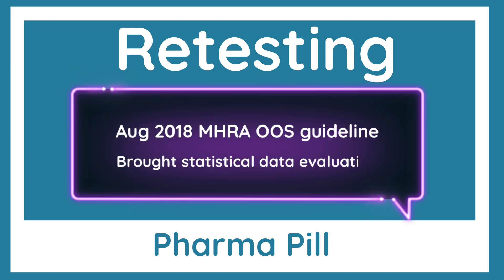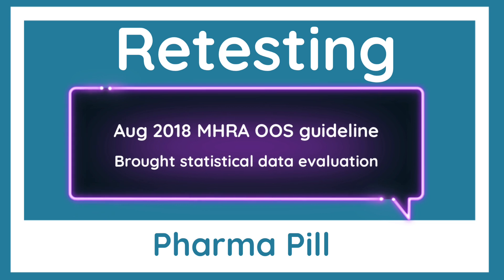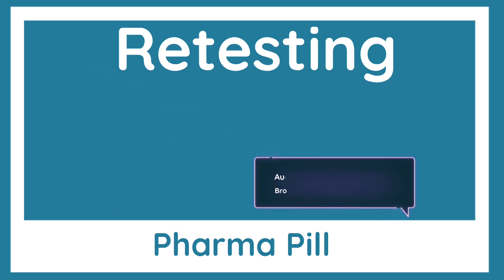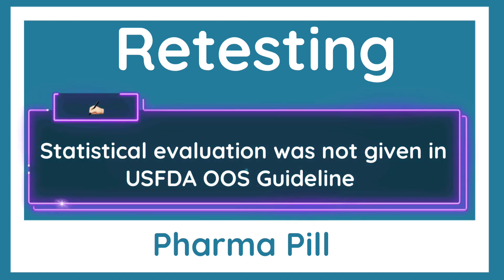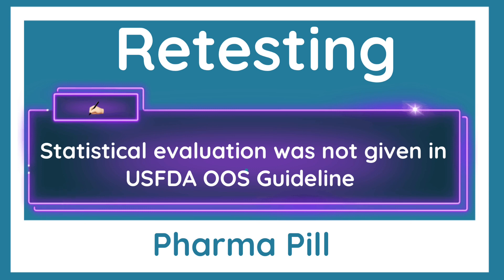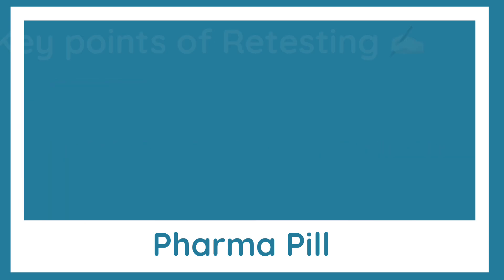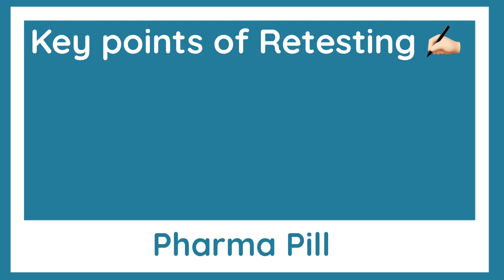It was August 2018 when the MHRA OOS guideline first time brought the concept of statistical evaluation of retesting data during the OOS investigation. As you may already know, the statistical evaluation of retesting data is not given in the US FDA OOS guideline, which was published in October 2006.